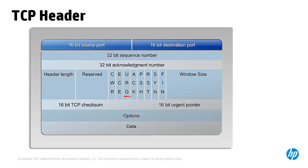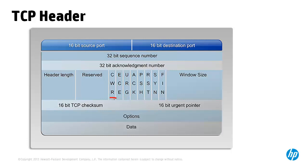The urgent flag can be used to indicate that a segment is urgent and should be processed as soon as possible, so the receiving device knows certain data should be prioritized. It is used in combination with the urgent pointer, which indicates how much of the data in the segment is urgent. However, the urgent flag isn't used much by modern protocols. The congestion window reduced flag is part of a congestion notification mechanism used in conjunction with the echo congestion notification flag, allowing hosts to communicate congestion and let the transmitter know it needs to slow down.